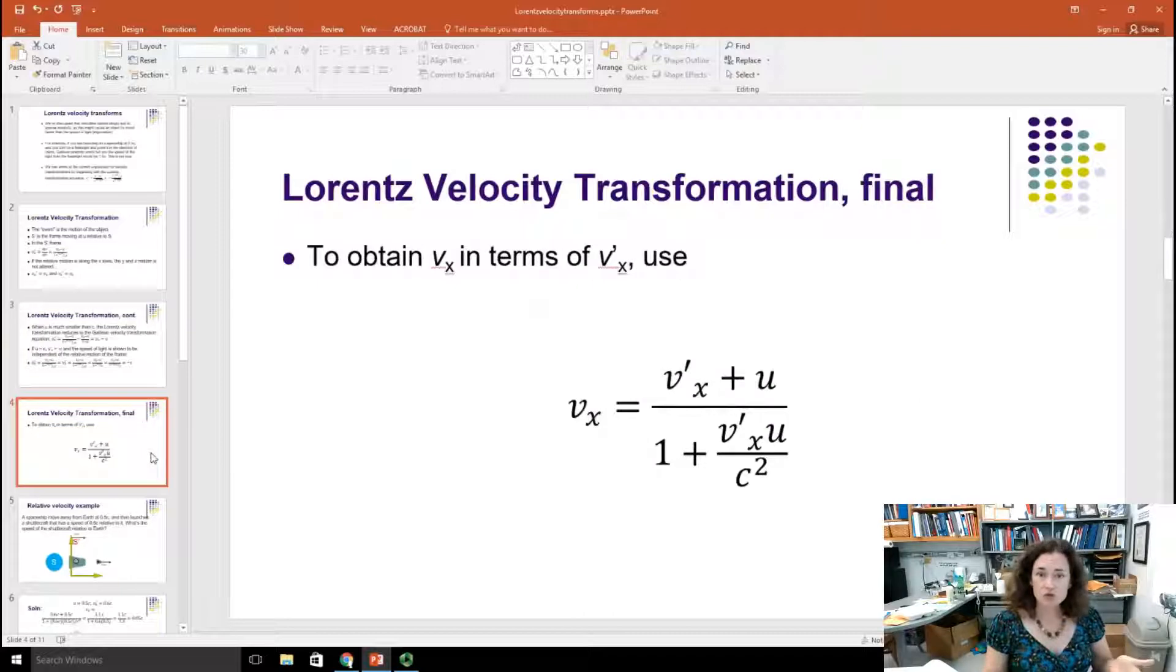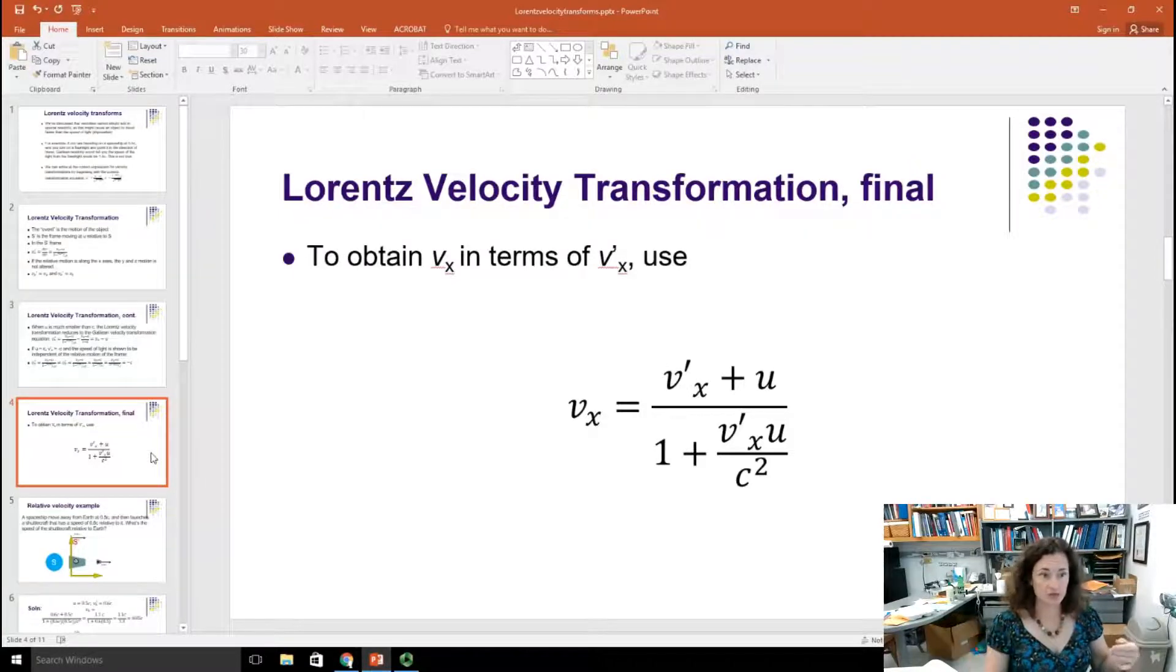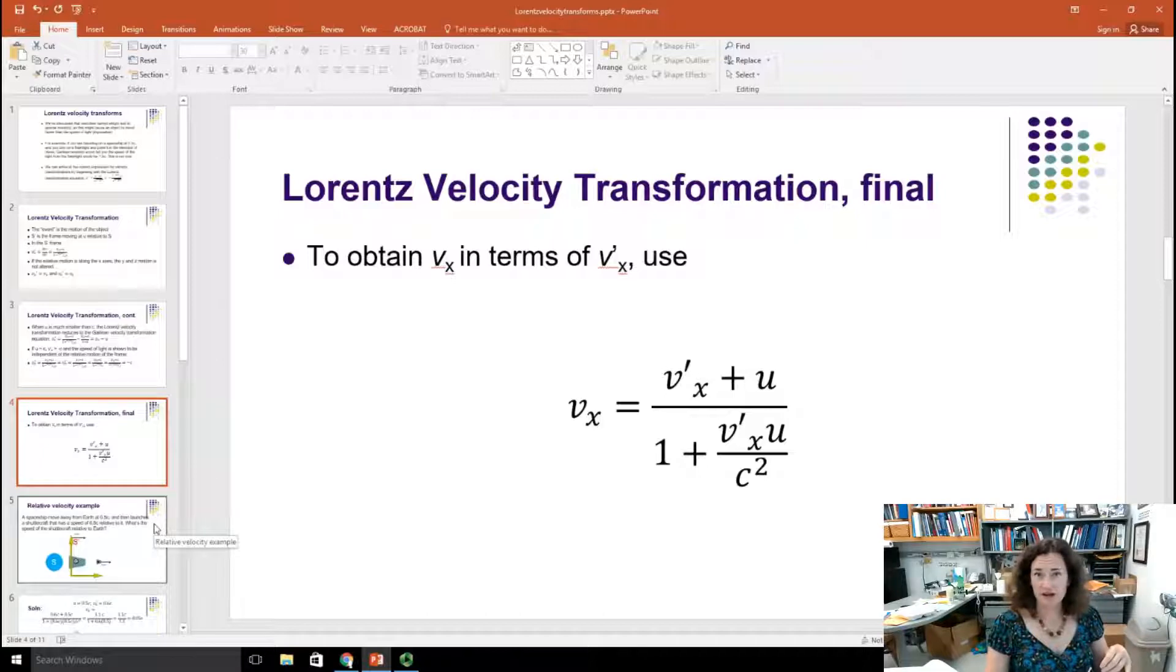Sometimes it's more useful to rearrange that equation and have the VX on the left-hand side instead of the VX prime. And this would be the case if you want to know what the speed of an object is from the perspective of the stationary frame if what you're given is the motion of the object within the moving frame. And I'll do an example here right now of that application.